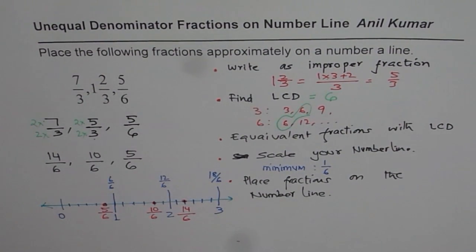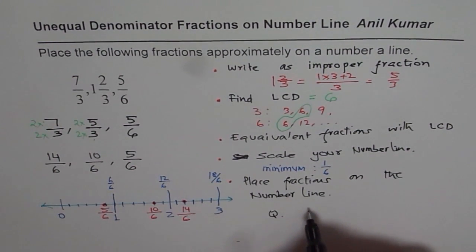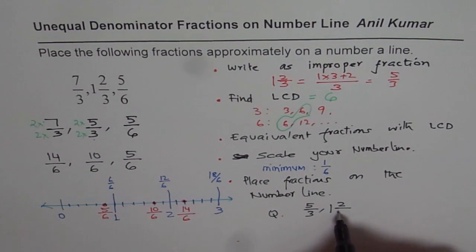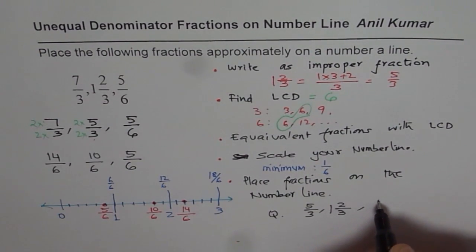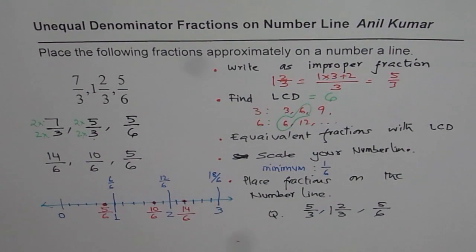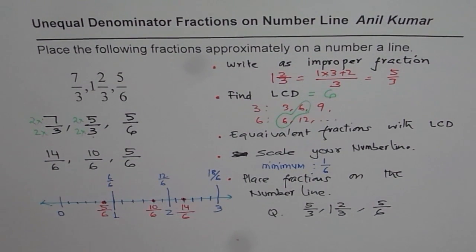I hope the steps are absolutely clear. Go through these steps once again and then take up some fractions and do it. Let the question for you be: you can do these fractions 5 over 3, 1 and 2 over 3, and let's say 5 over 6. Once you arrange them on a number line, you can also arrange them in ascending or descending order. I hope this helps. Thank you and all the best.